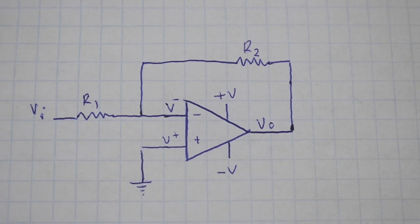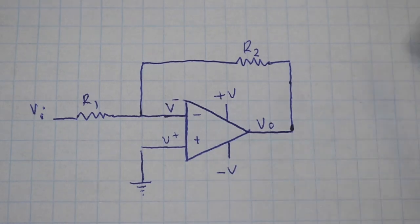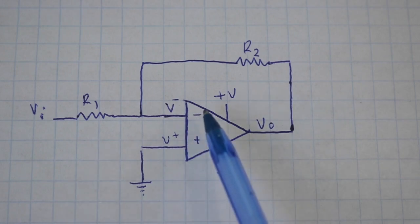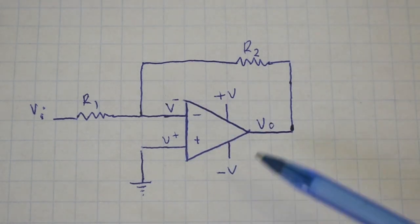Now let's remember the basic behavior of the operational amplifier. This is explained in the first video of the series, the link is in the description. But basically, if the voltage of the non-inverting input is higher than the voltage of the inverting input, at the output we will have plus V. And vice versa, if the non-inverting input voltage is higher, then at the output we will have minus V.